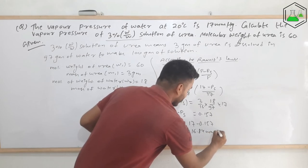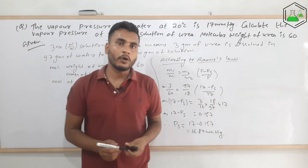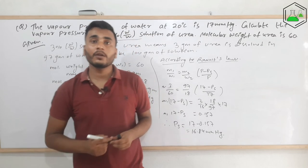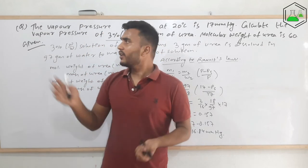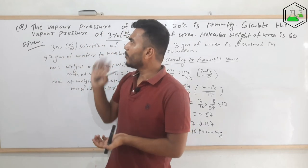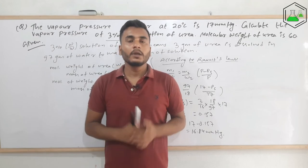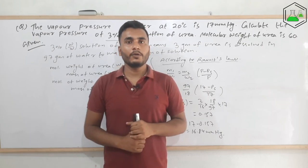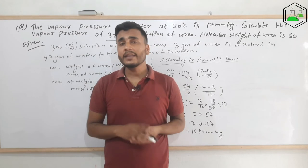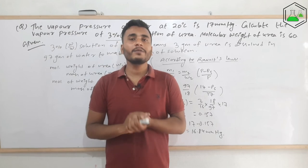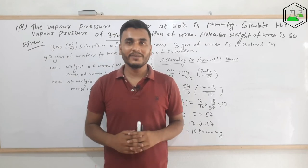So we calculated the vapor pressure of the solution as 16.84 mmHg. This is one of the very important numerical problems of colligative properties. That's all for this video. I hope you understood everything. If you liked the video, please share it. Thank you for watching.